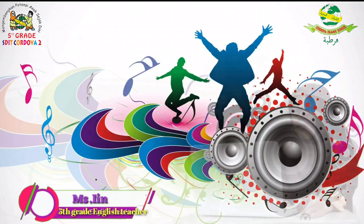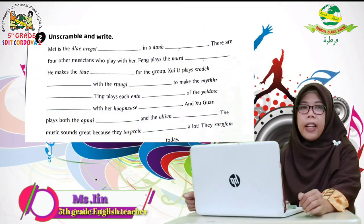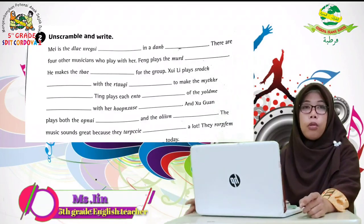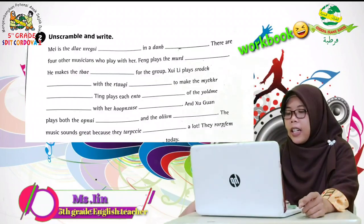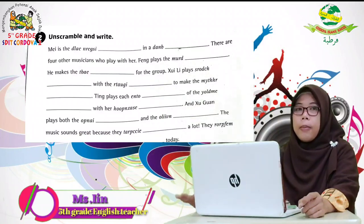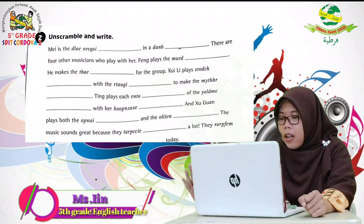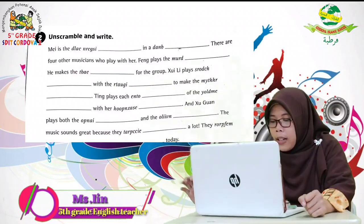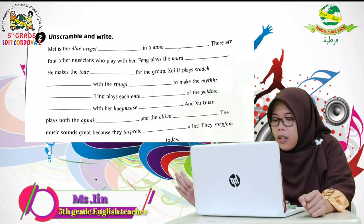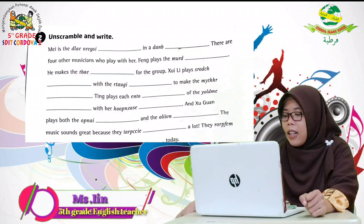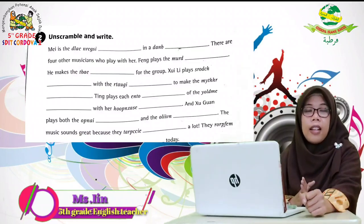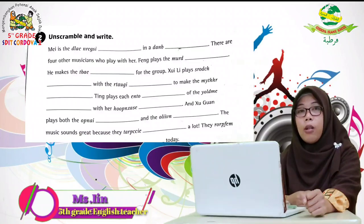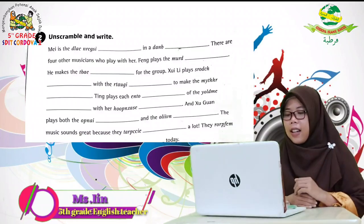Number two adalah PR. Jadi PR-nya ada dua ya — yang pertama adalah point seven di student book, yang kedua adalah point two di workbook. Apa PR-nya? Unscramble and find the word. Jadi di situ ada kata yang berantakan, acak-acakan — silahkan kalian susun menjadi satu kata yang tepat. Sesuaikan dengan alur ceritanya. Silahkan dikerjakan.